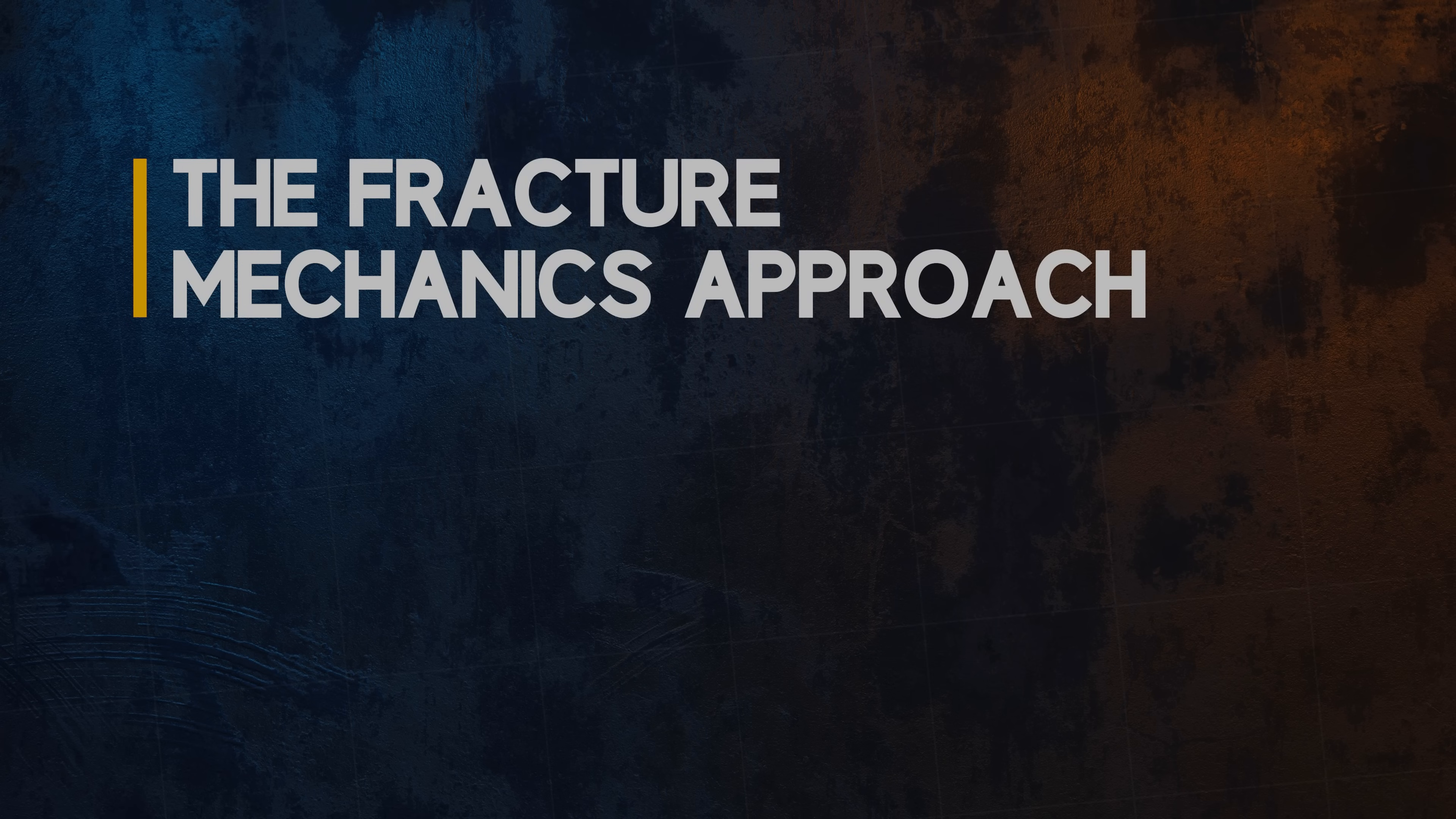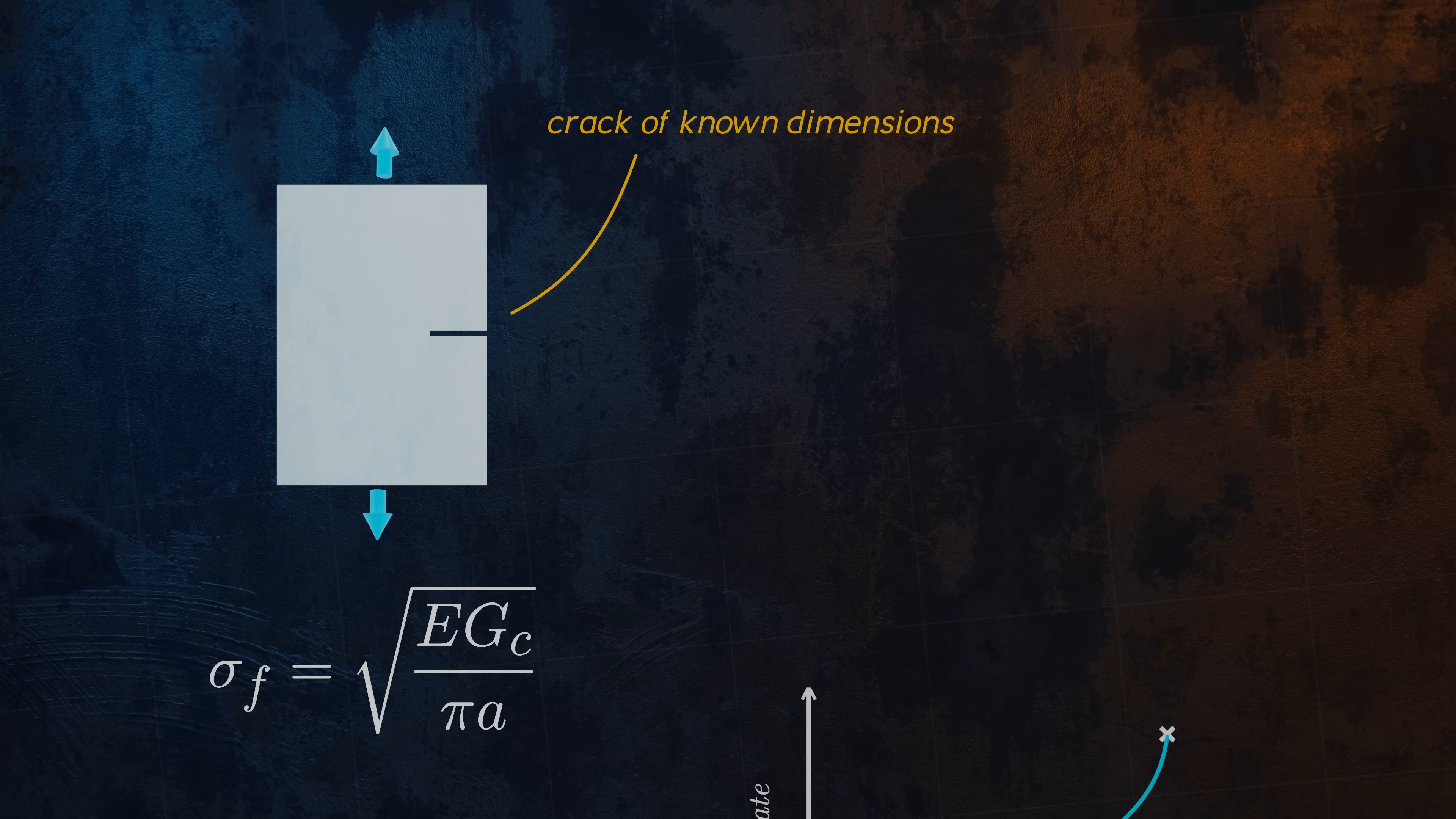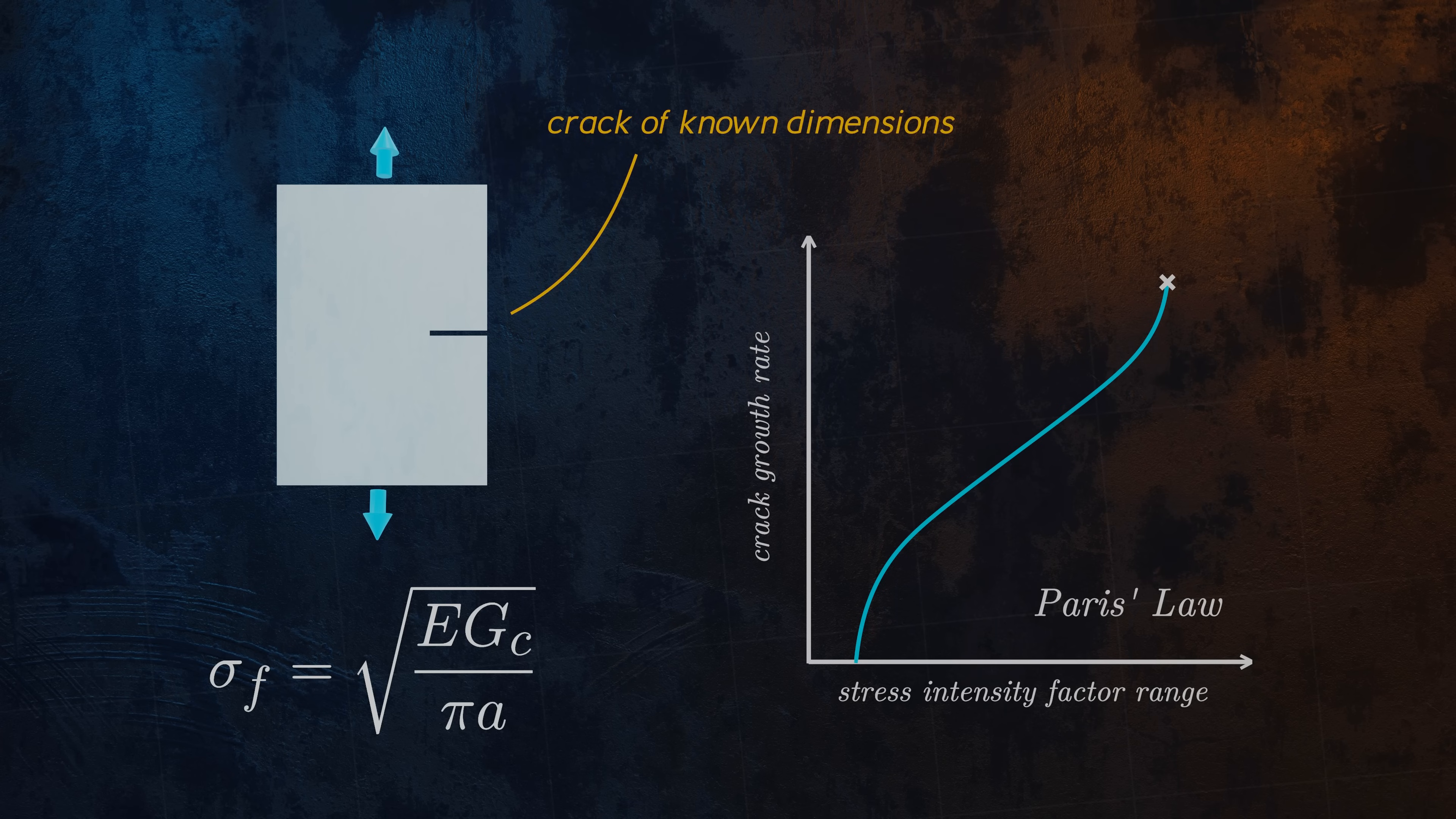If the structure we are assessing contains an existing crack, the S-N approach is not suitable for determining the fatigue life. If the dimensions of the crack are known, we can instead determine the fatigue life using a linear elastic fracture mechanics approach. This involves calculating a critical crack size which would result in fracture, and using a crack growth law to calculate the time required for the crack to grow to this critical size. But that's enough about fatigue for now. Stay tuned for more engineering videos.